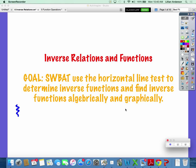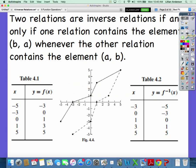To start off, two relations are inverse relations if and only if one relation contains the element (b,a) whenever the other relation contains the element (a,b). Inverse relations are the opposite of each other. So basically, they're switching their x and y values to get your points on your inverse.